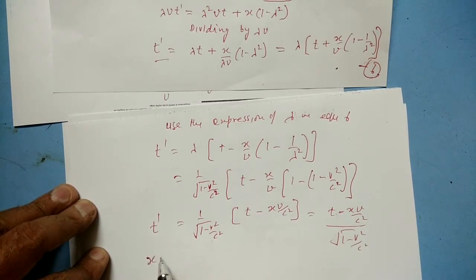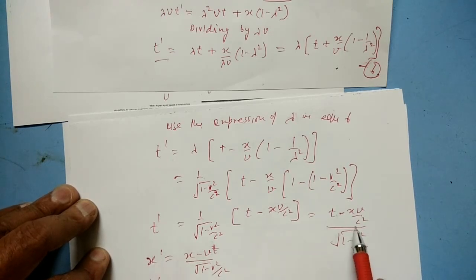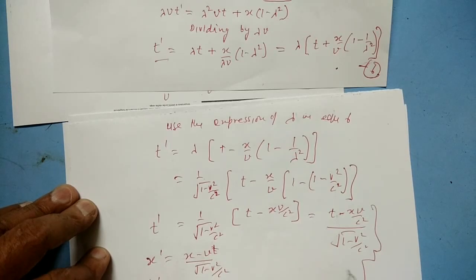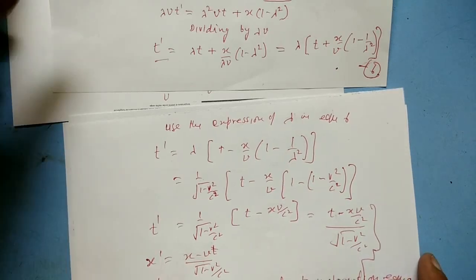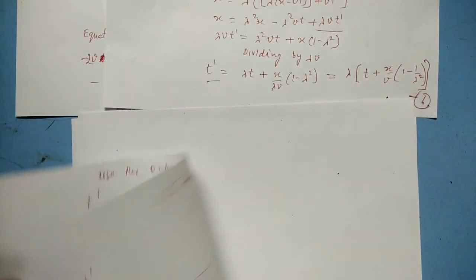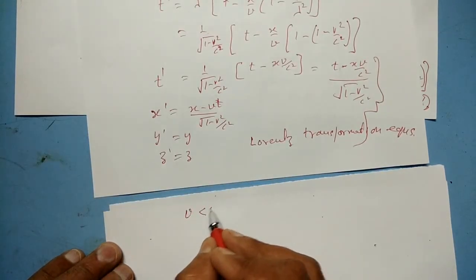The complete set of Lorentz transformation equations is: x' = (x - vt)/√(1 - v²/c²), y' = y, z' = z, and t' = (t - xv/c²)/√(1 - v²/c²). We call these the Lorentz transformation equations.